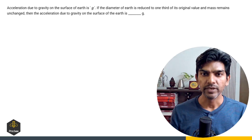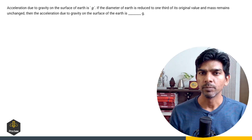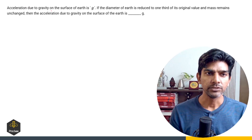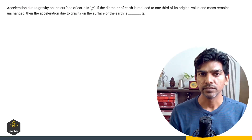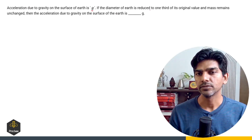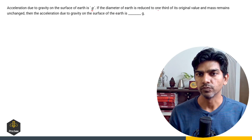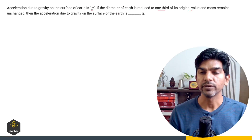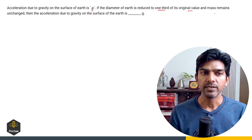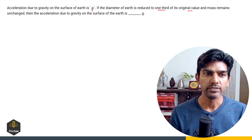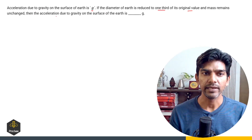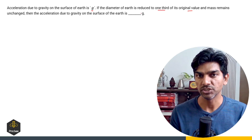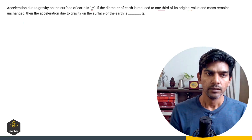The very first question is about the variation of g. So acceleration due to gravity on the surface of the earth is G. If the diameter of the earth is reduced to one third of its original value, diameter is getting one third and mass remains unchanged. Then the acceleration due to gravity on the surface of the earth is how many times G?